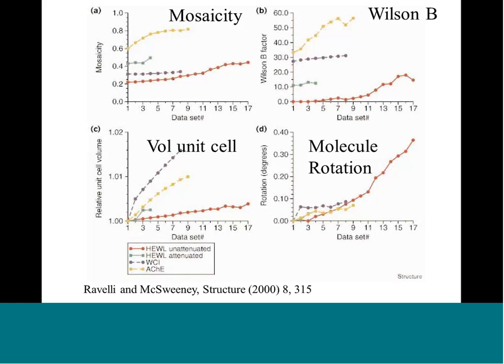A fourth alarming thing is that the molecule can actually rotate within the unit cell, within the minimum translatable unit. This means we get non-isomorphism within one dataset, because the unit cell is increasing and the molecule is rotating within the unit cell. Francis Crick and Beatriz Magdoff showed in 1956 that if a unit cell of 100×100×100 increased by 0.5 angstroms on each dimension, then the intensity of the reflection at 3 angstroms would change by 15% — a terrifying number.